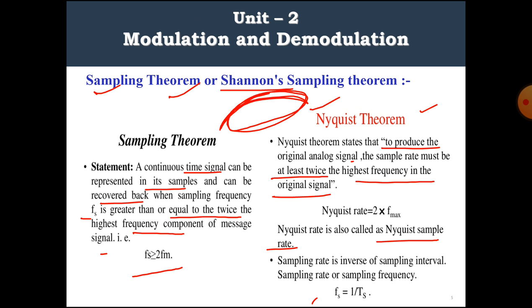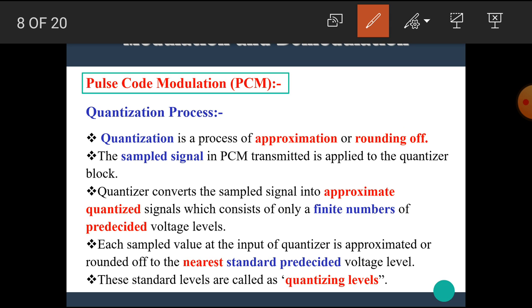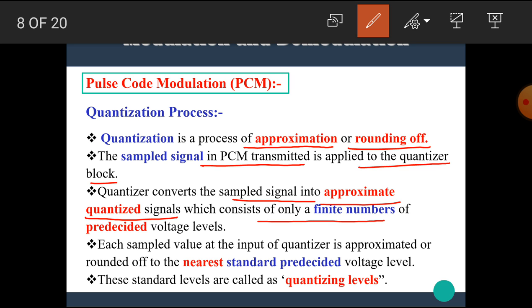Now let's see the quantization process. Quantization is a process of approximation or rounding off. The sampled signal in the PCM transmitter is applied to the quantizer block. The quantizer converts the sampled signal into an approximate quantized signal which consists of only a finite number of pre-decided voltage levels. Each sample value at the input of the quantizer is approximated or rounded off to the nearest standard pre-decided voltage level. These standard levels are called quantizing levels.